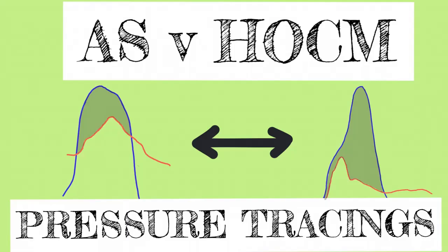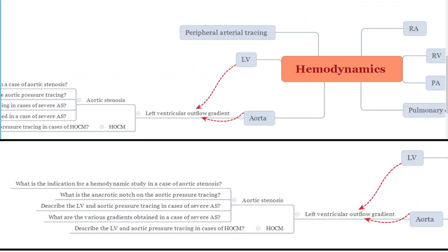Today's video is going to be about aortic stenosis versus hypertrophic obstructive cardiomyopathy in terms of their pressure tracings. We're essentially dealing with a topic in hemodynamics — both the left ventricular as well as the aortic pressure tracing — and they both contribute to a left ventricular outflow tract gradient in terms of disease states. We're going to be speaking about AS and HOCM, and these are a few questions with regards to both of them.